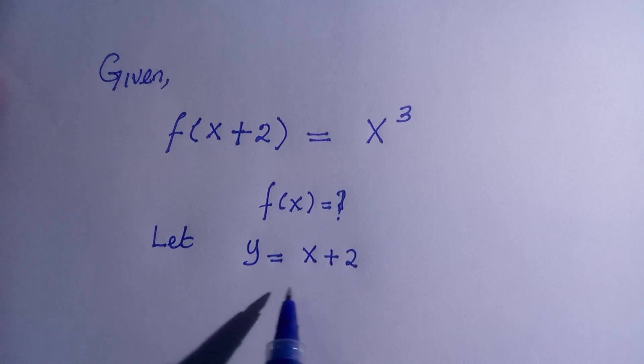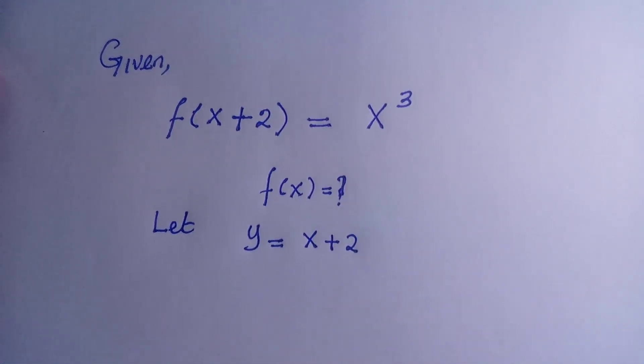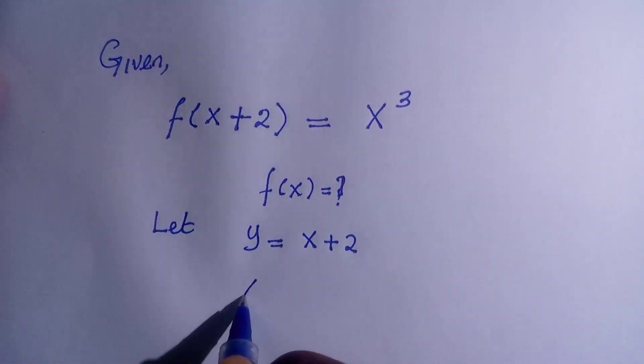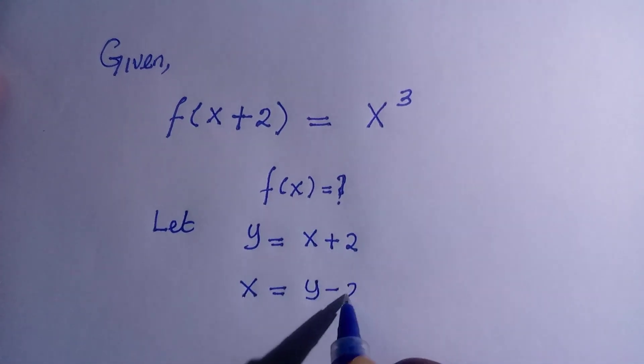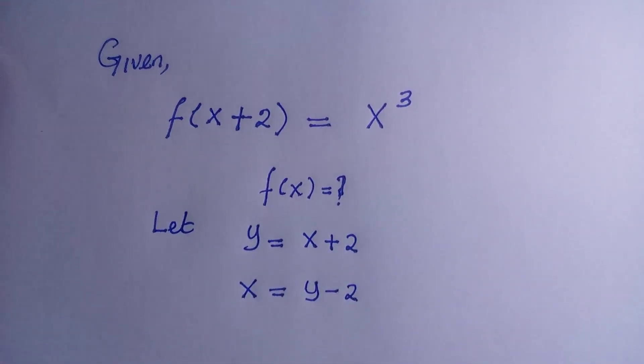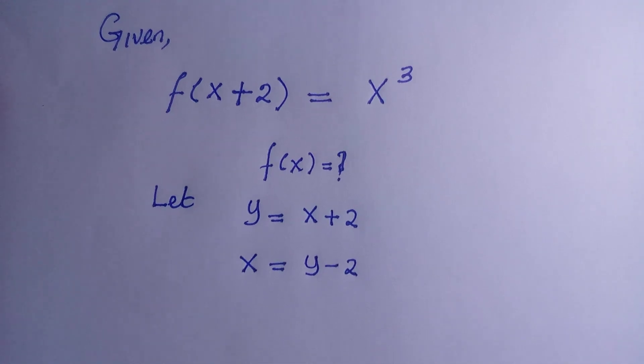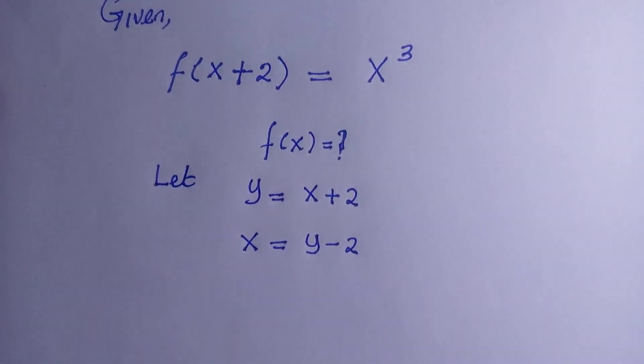Making x the subject of the formula, we have x equals y minus 2. So since we have this, then we come back to the given function, which is f(x+2), and we replace it with y. And anywhere we have x, we replace it with y minus 2.